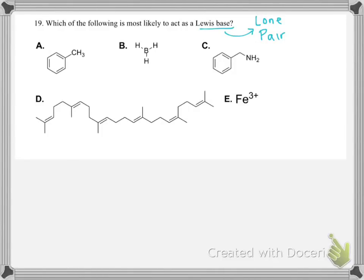For number 19, it asks us to pick out which is most likely to act as a Lewis base. To be a Lewis base, you have to have a lone pair. That's our sole definition for a Lewis base — something that can donate a lone pair.